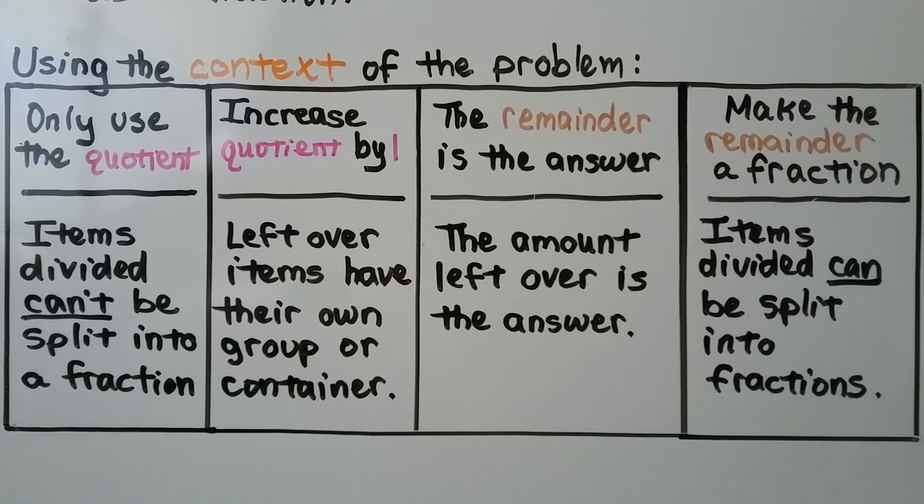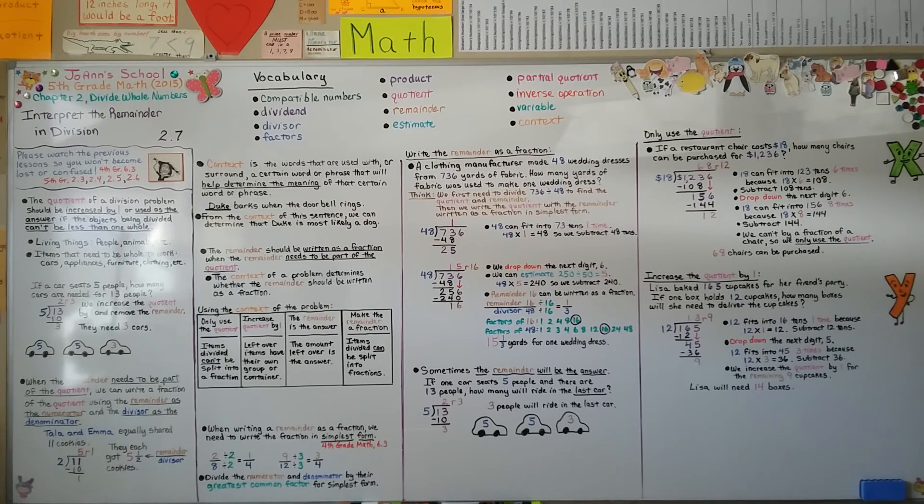So depending on the context of the problem, we're going to use only the quotient, increase the quotient by 1, the remainder will be the answer, or we'll make the remainder a fraction. Sometimes you'll have to read a word problem more than once to completely understand what it's asking of you. And be careful of the context. In our next lesson, 2.8, we're going to adjust quotients if they're too high or too low when we estimate for long division. I hope you have a wonderful day and I hope I see you next time.